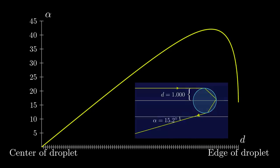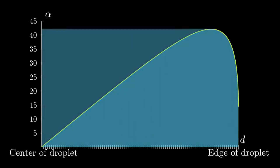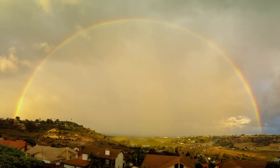We see that, depending on the value of d, reflection is possible at any angle up to about 42 degrees. This is a bit strange, because it seems to imply that a rainbow would be a filled disk in the sky, rather than a circular arc.